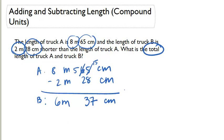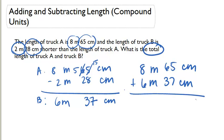They want to know what's the total length of A and B. So we have 8 meters 65 centimeters plus 6 meters 37 centimeters giving us 14 meters.